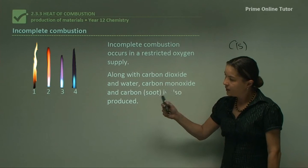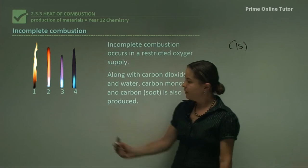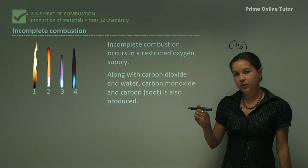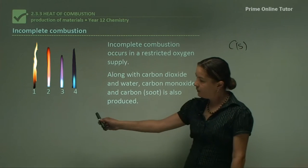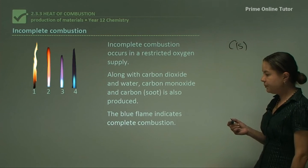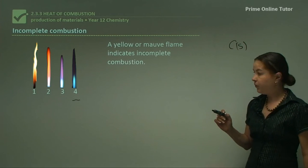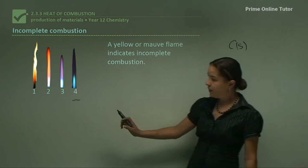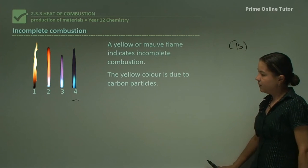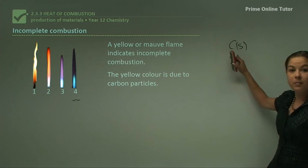These pictures show a range of different alkanols being burnt at different oxygen levels. Number four has quite a lot of oxygen, and number one has less. If you think of your Bunsen burner at school — where you open and shut the valve to get more or less oxygen — with less oxygen you get that yellow flame like number one, and with more oxygen you get more complete combustion like number four. The blue flame indicates complete combustion, while a yellow or mauve flame indicates incomplete combustion. The yellow colour is due to carbon particles, since incomplete combustion produces carbon solid soot.